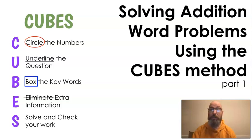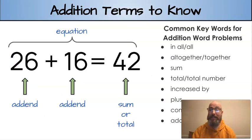Before we get started, I want to go over some addition terms that you need to know. We have the addend and the addend, which is the two numbers you're adding. And then you have the answer, which is called the sum or total. Usually it's called the sum, but sometimes you will see it called total. When you take all of that together, we have the equation.